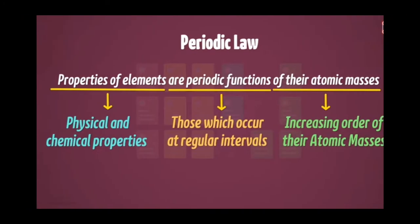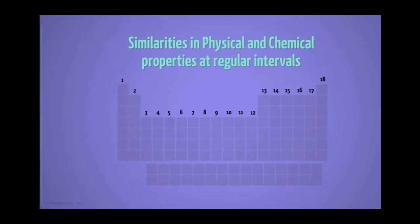Let's understand the meaning of this law. Properties of elements means the physical and chemical properties of all elements in the table. Periodic function means those which occur at regular intervals. Of their atomic masses means while arranging in the increasing order of their atomic masses. So, we can say that when elements are arranged in the increasing order of their atomic masses, they show similarities in the physical and chemical properties at regular intervals.